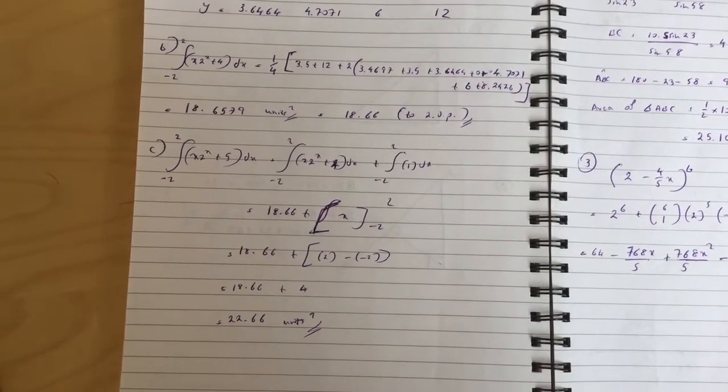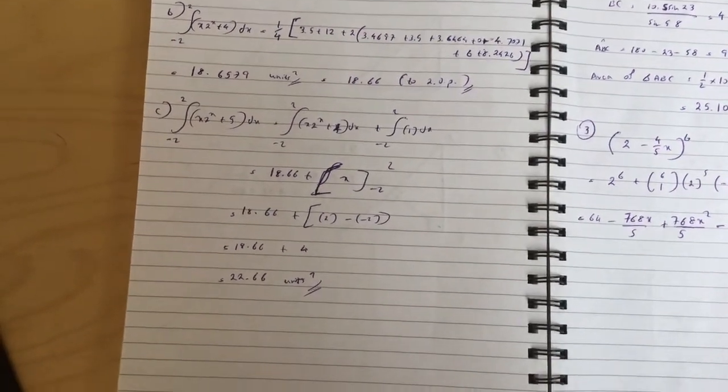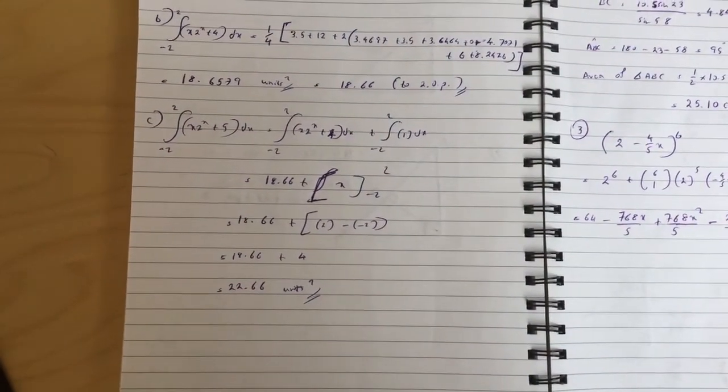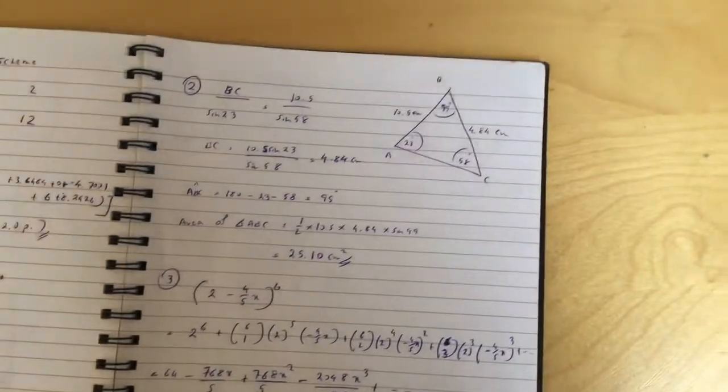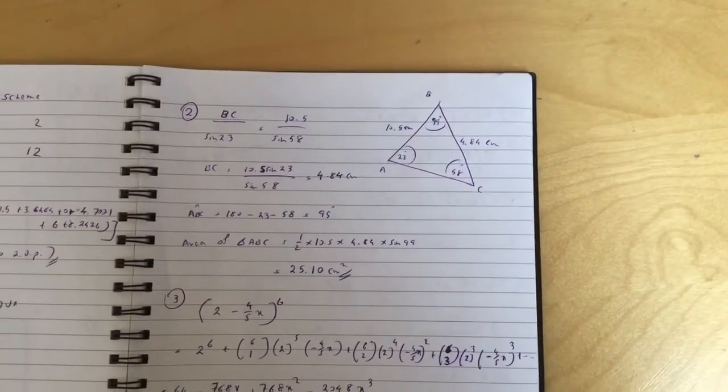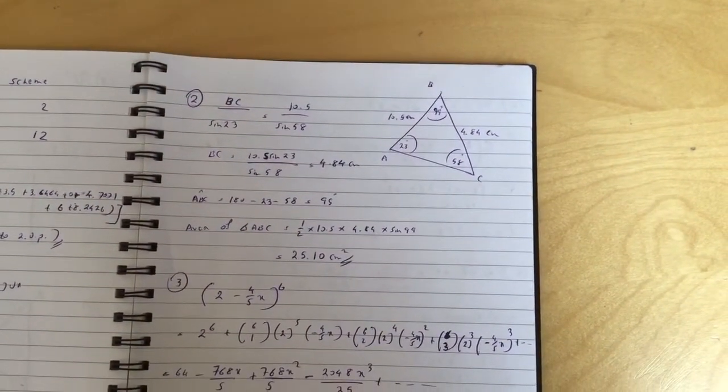Check how I separated that extra one using a different integral. Go through it guys, I'm sure it's easy to follow. Question two is a basic GCSE question. I found BC and then angle ABC, and then I just used the area of triangle formula.